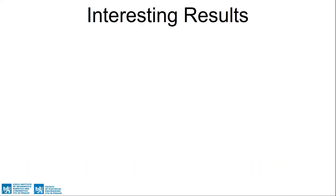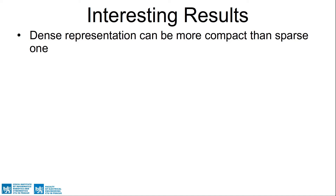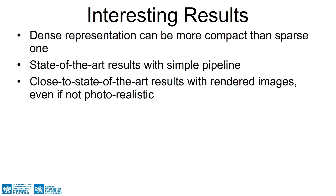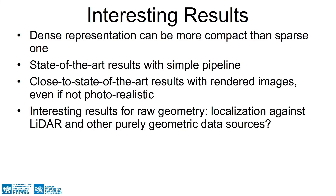To summarize the interesting results from our paper: we show that dense representations can be more compact than sparse ones. Our simple pipeline achieves state-of-the-art results when using the original images, and close to state-of-the-art results with images rendered from colored or textured meshes. We also show that localization relative to raw geometry without any color information is possible, opening the possibility to use lidar scans for visual localization.